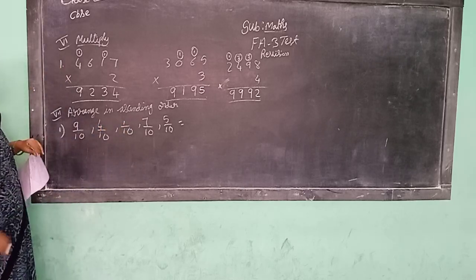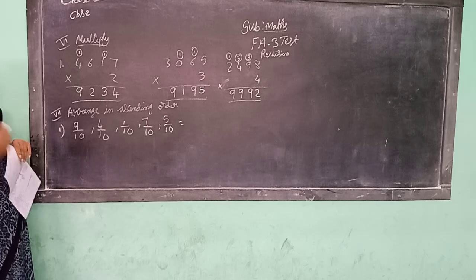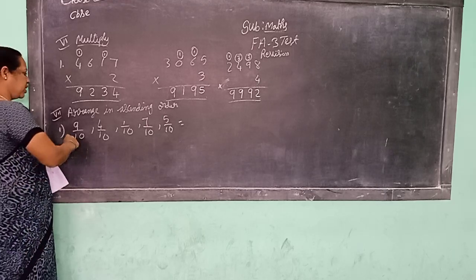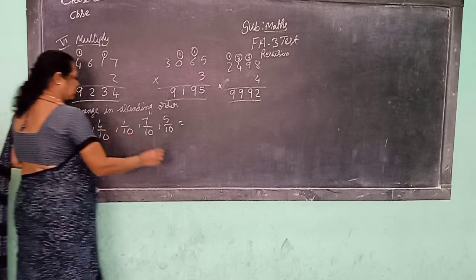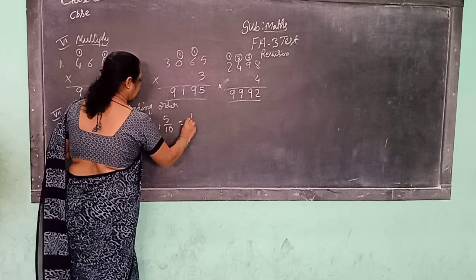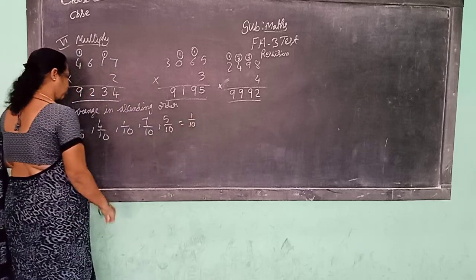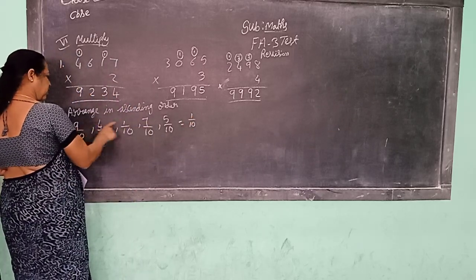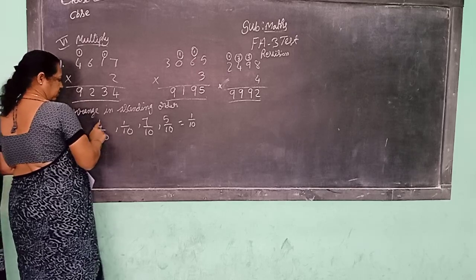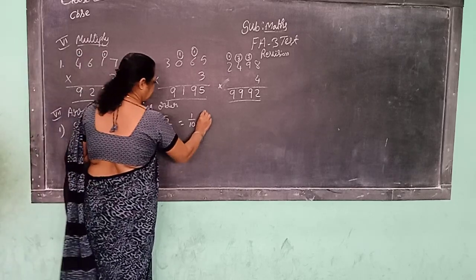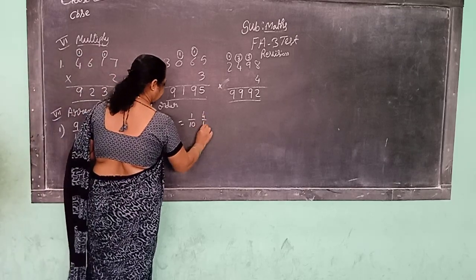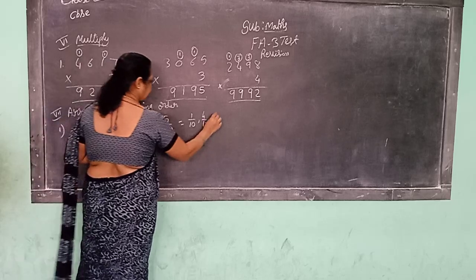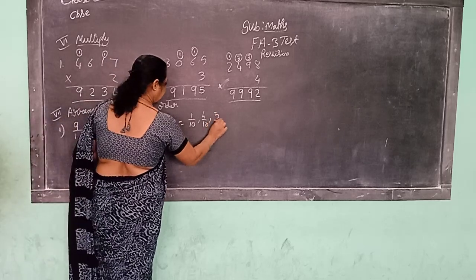Which is the smallest number? Small number to big number. The small number here is 1. So first: 1 by 10. Next, is 2 there? No. Is 3 there? No. 4? Yes. 4 by 10. Next: 5 by 10.